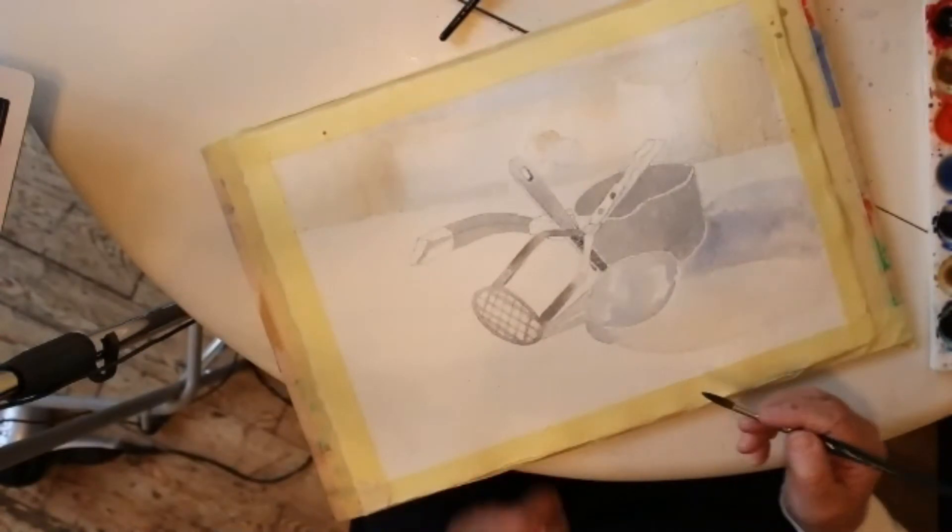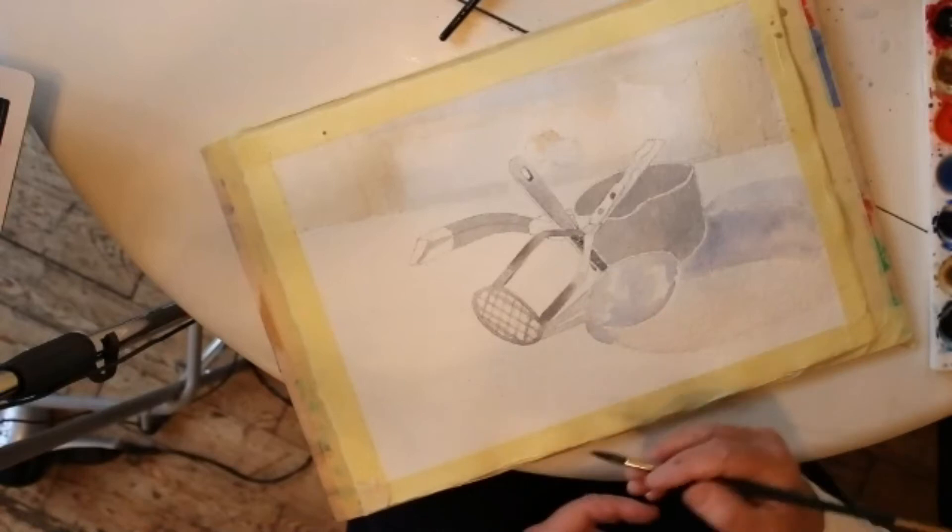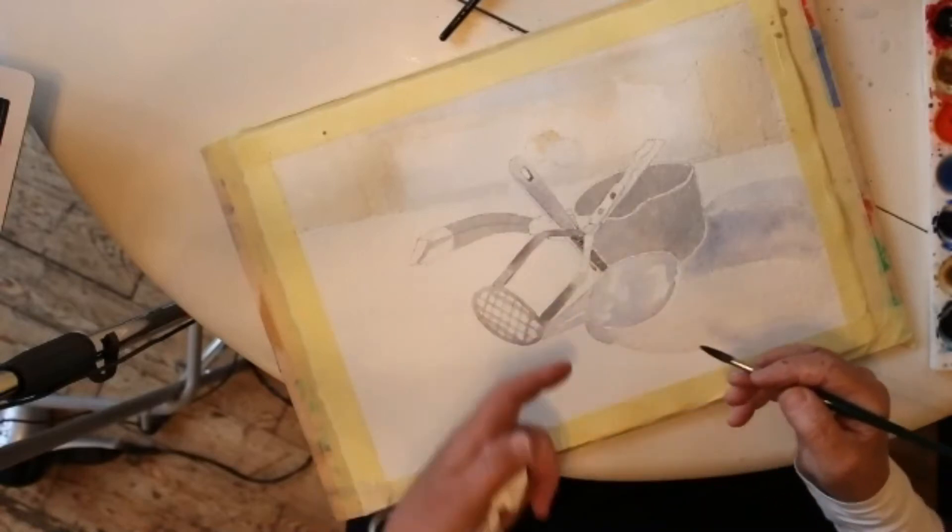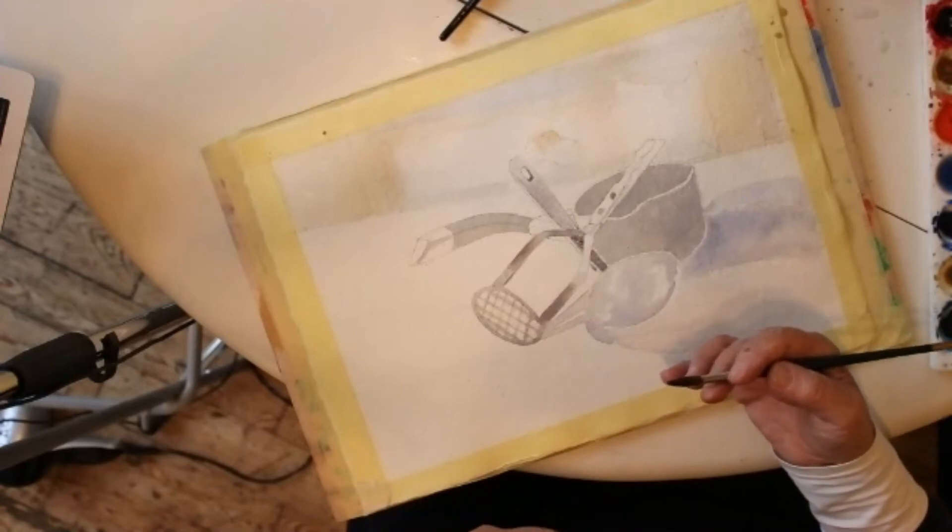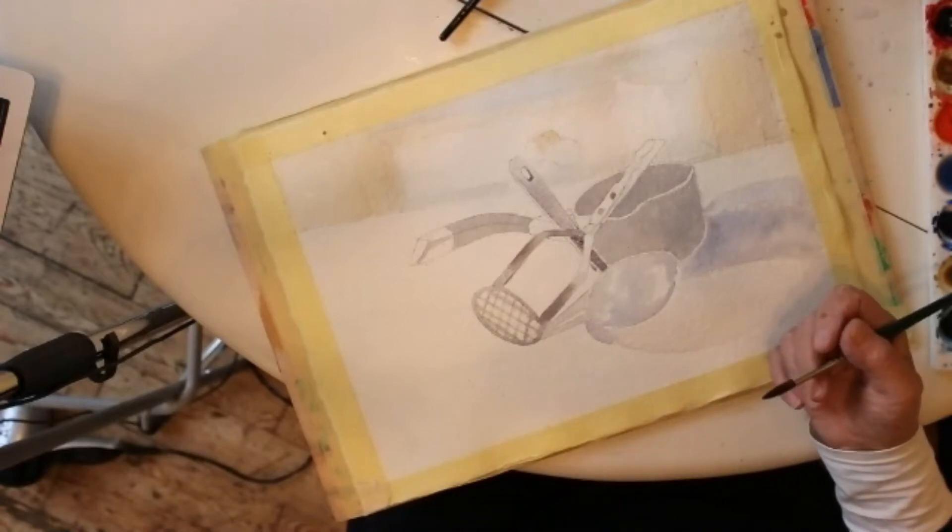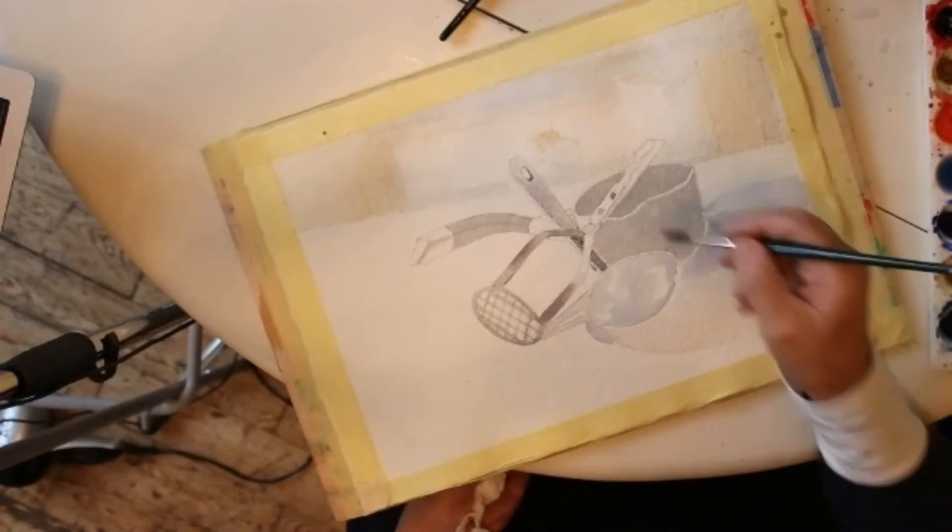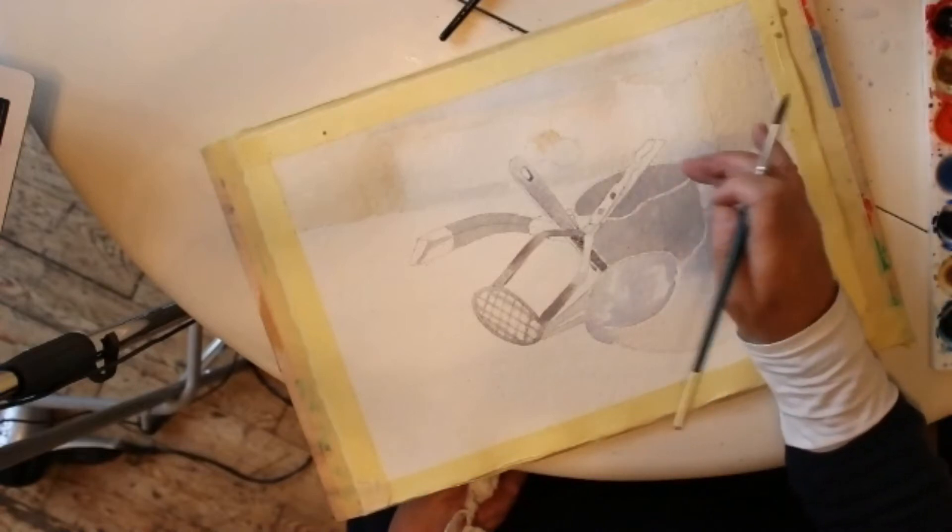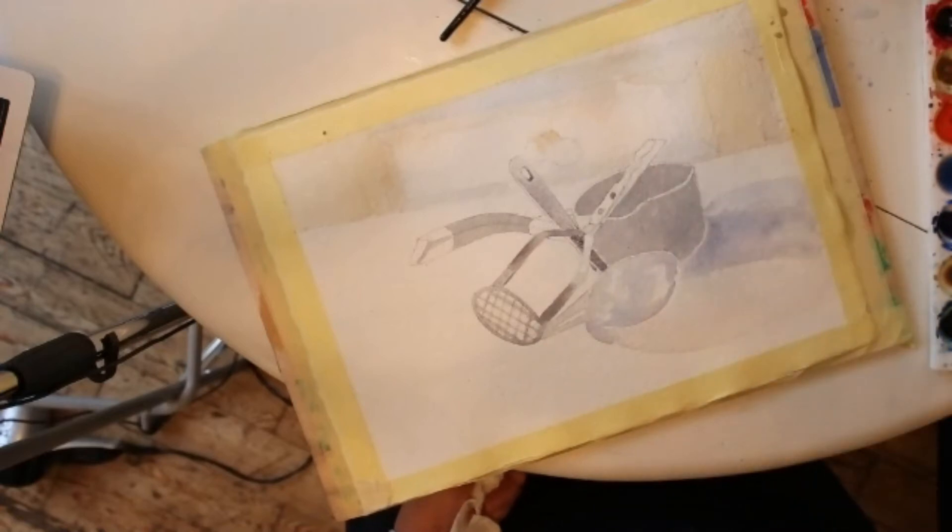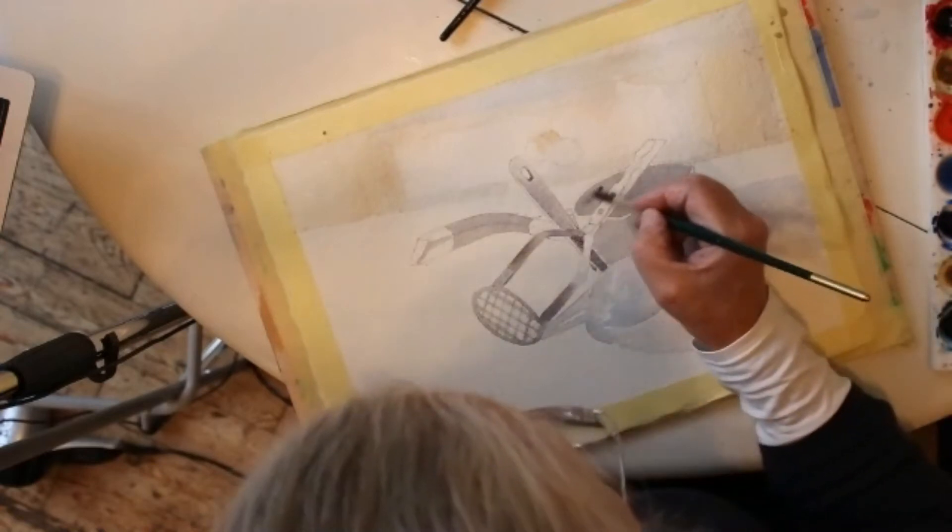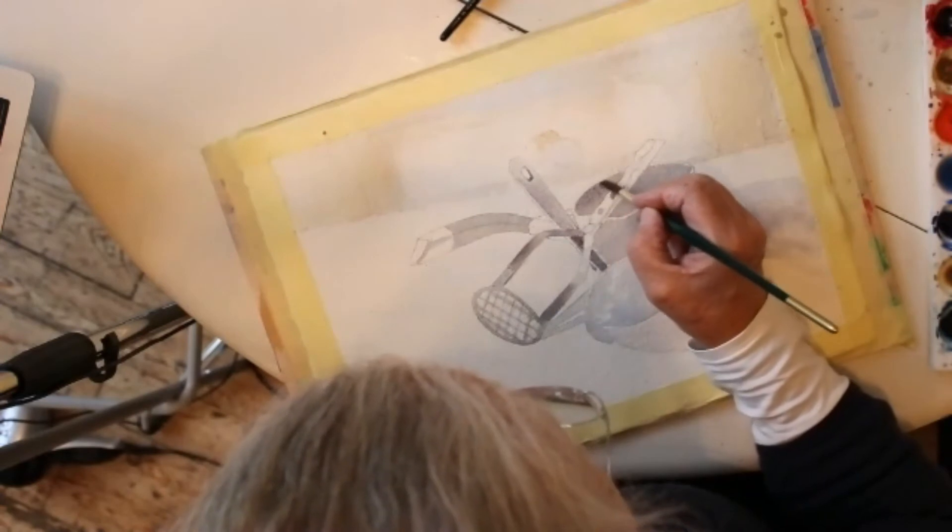The way you do that is by using cooler colors for those shapes that are further back and warmer colors or warmer grays for the shapes and objects that are closer to me. Now I'm going to go back into the saucepan because I think that's more or less ready, and I'm going to put some of this strong dark bluey gray in here. I'm just going to drop it in.